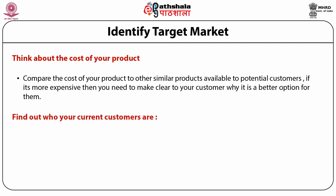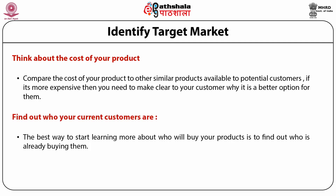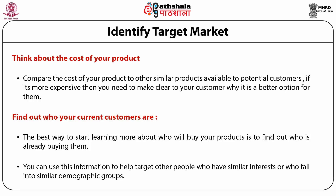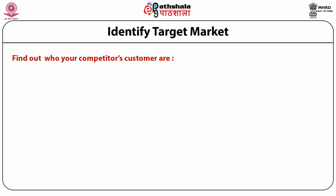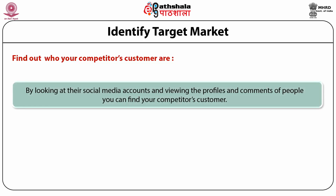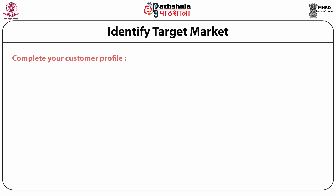Find out who your current customers are. The best way to learn about who will buy your product is to find out who is already buying it. You can use this information to target other people with similar interests or demographic profiles. You can learn about your customers through conversation, organizing a reward program, or using Google Analytics on your website. You can also learn about competitors' customers by looking at their social media accounts and viewing the profiles and comments of their followers.